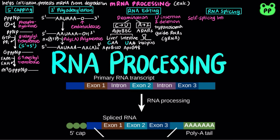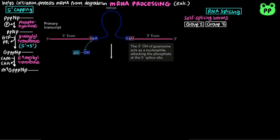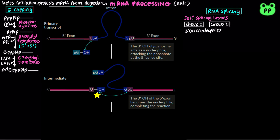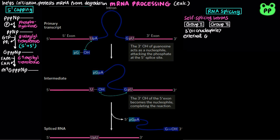Some introns are capable of splicing themselves. In group 1 introns, the 3' hydroxyl group of an external guanosine acts as a nucleophile, attacking the phosphate at the 5' splice site. The 3' hydroxyl group of the 5' exon then becomes the nucleophile and attacks the phosphate at the 3' end of the intron, releasing the intron, which is not in a lariat form, and the spliced RNA.